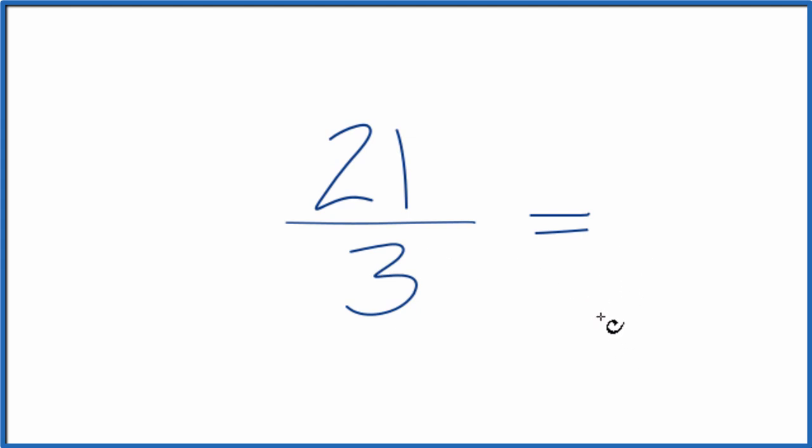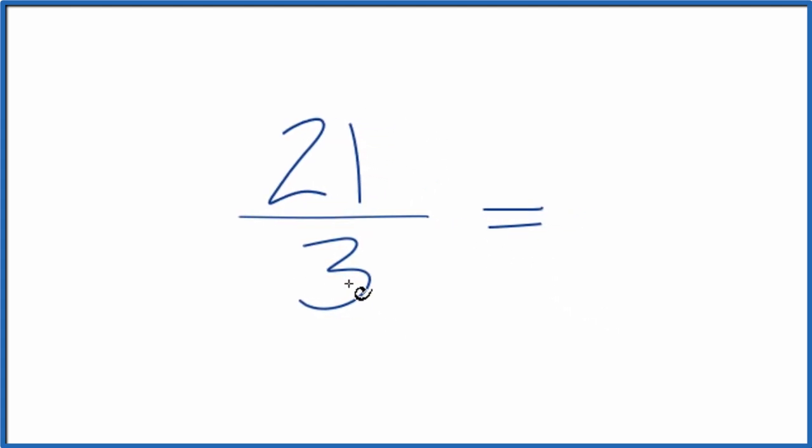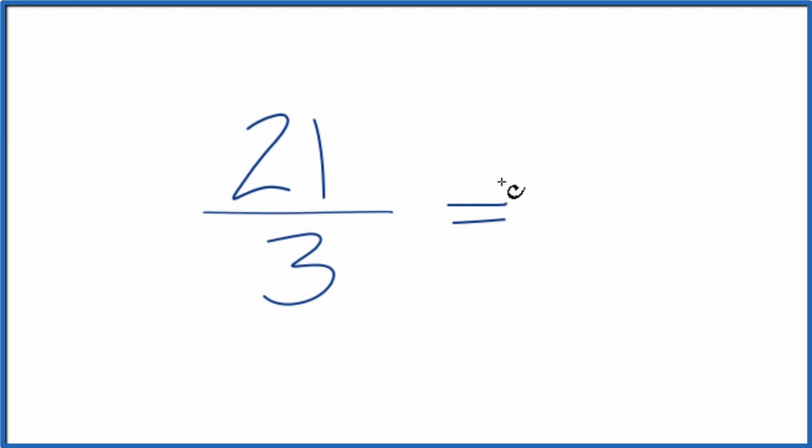To do that, we need a common factor, something that goes into both 21 and 3. I know that 3 times 7, that's 21, and 3 times 1, that would give us 3. So my common factor, my greatest common factor, is 3.